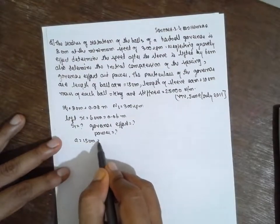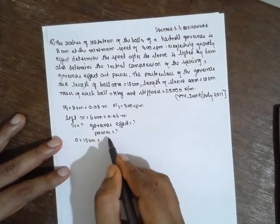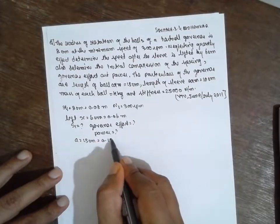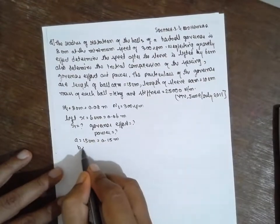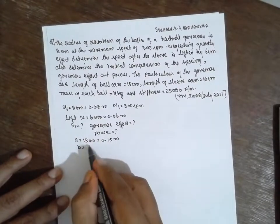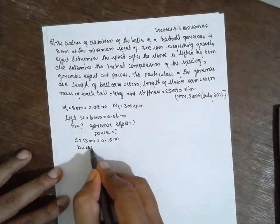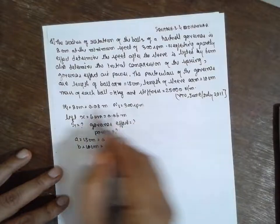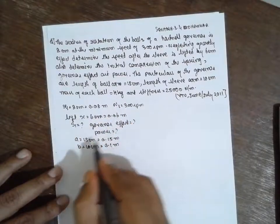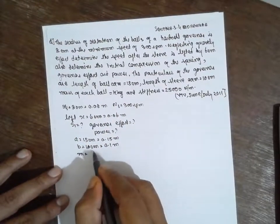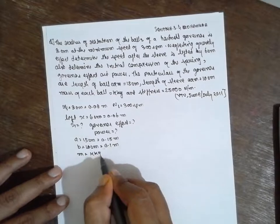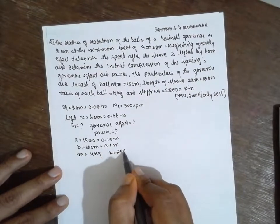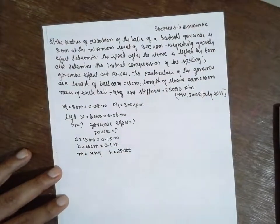In terms of meters, A will be 0.15 meter and B will be 0.10 meter. The mass of the ball M is given as 4 kg, and the stiffness K is 25,000 N/m.